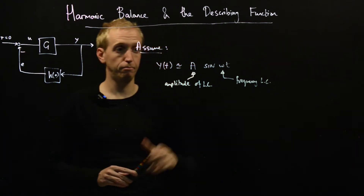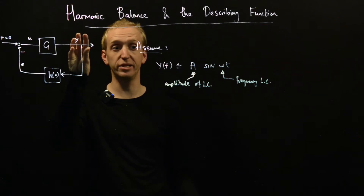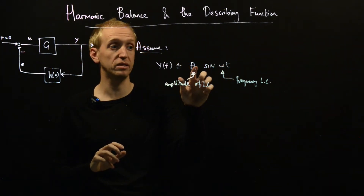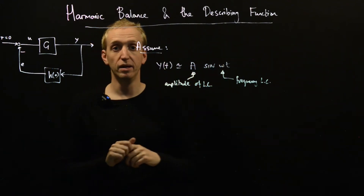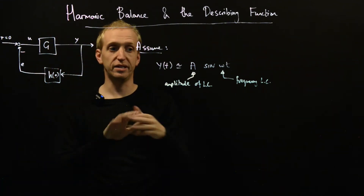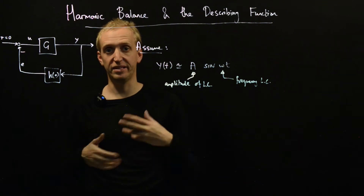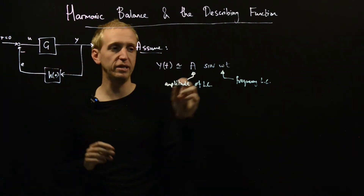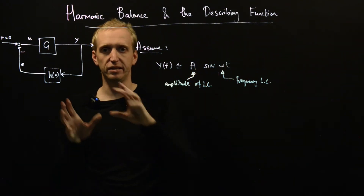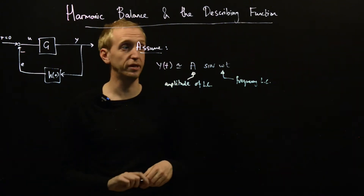We're going to say: let's suppose we have a limit cycle roughly characterized by a sinusoid with this amplitude and this frequency. Let's step through what all the other signals need to be in this loop such that this could be roughly true. We can tweak A and tweak the frequency until we achieve what's called a harmonic balance. It's probably best to just start to illustrate the various pieces.